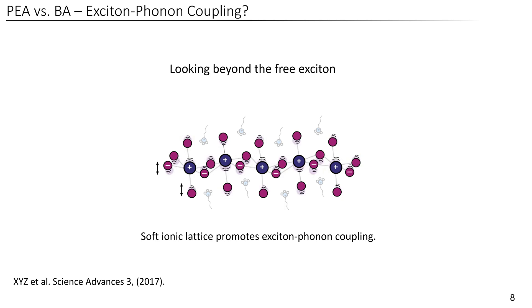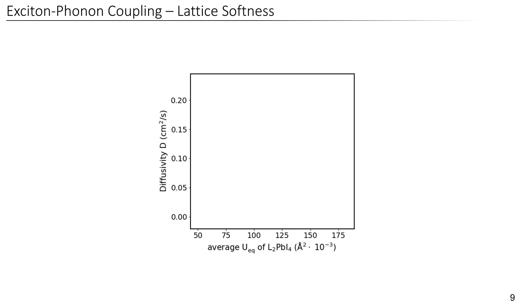Recently, Gong et al. found that the atomic displacement is a good measure for the coupling strength of excitons and phonons. The atomic displacement tells us how far an atom in the crystal lattice vibrates around its equilibrium position. So let's have a look by plotting the diffusivity of our perovskites as a function of the average atomic displacement for each unit cell.